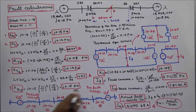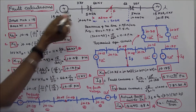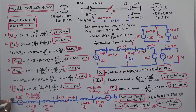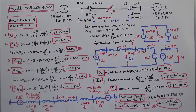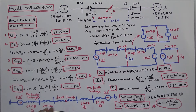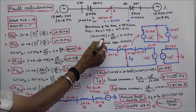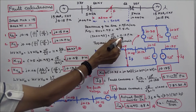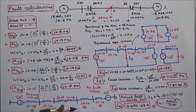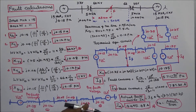The second step is to draw the reactance diagram. The pre-fault voltage is 1∠0°. The reactance of Generator 1 is J.15, Transformer 1 is J.12, the transmission line for 25 km is J.08 on each side of the fault point, Transformer 2 is J.12, and Generator 2 is J.15.